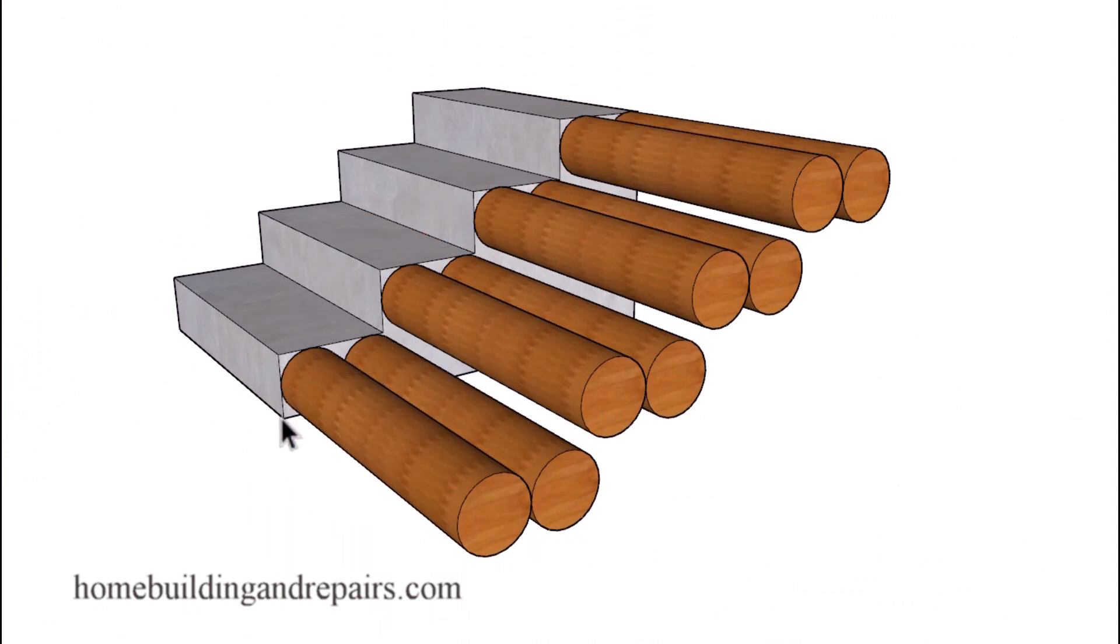And last on the list will be the fact that some building codes will not allow this because of the curvature of the nosing. That shouldn't be more than 9/16ths of an inch. And in this example here, we have a 3 1/2 inch curvature.